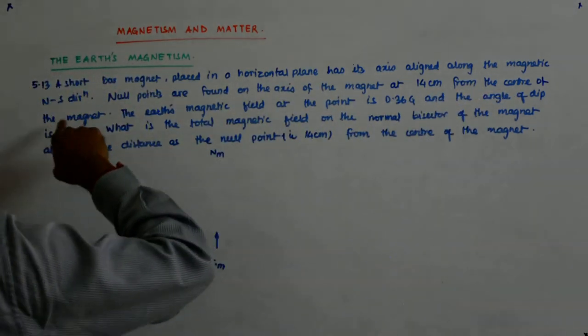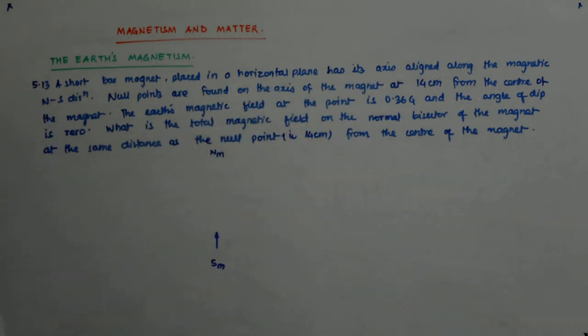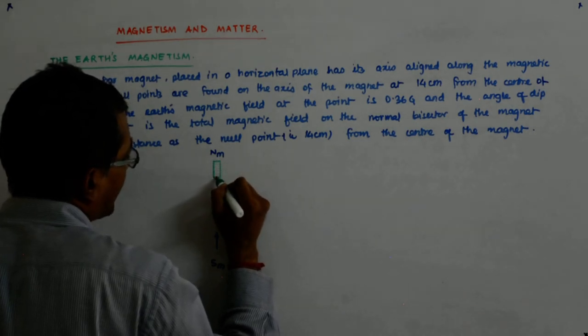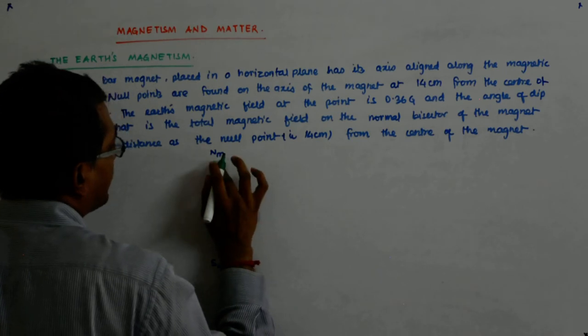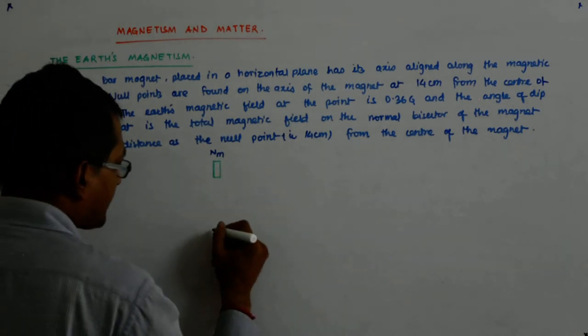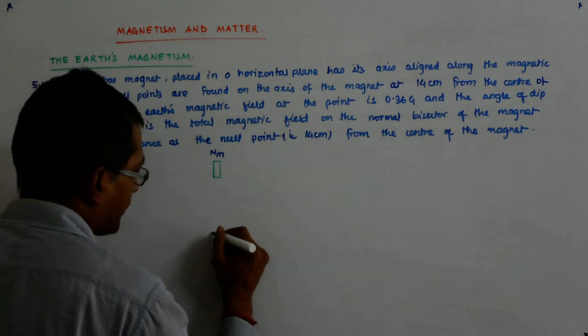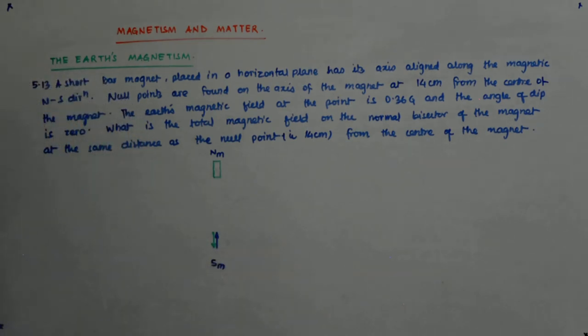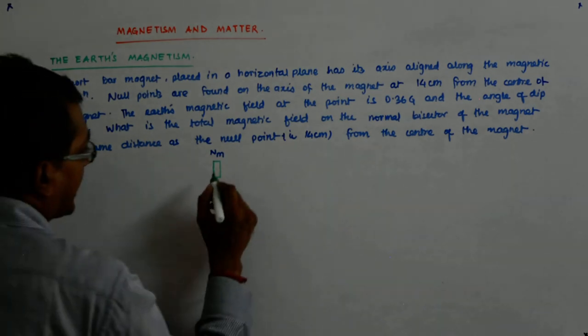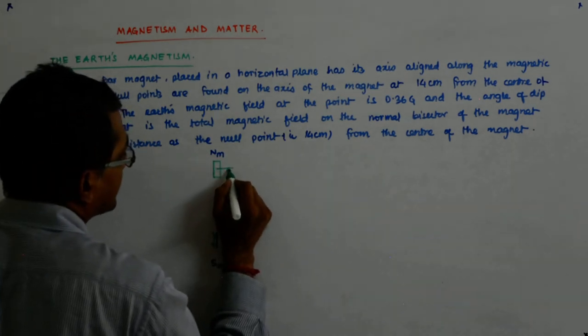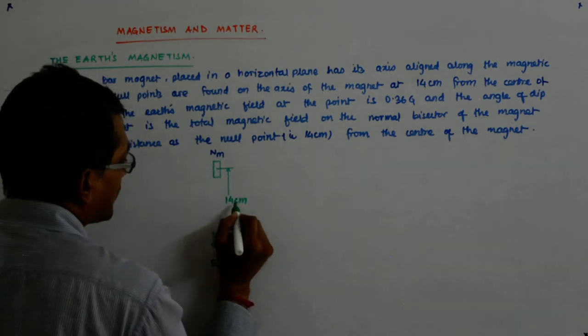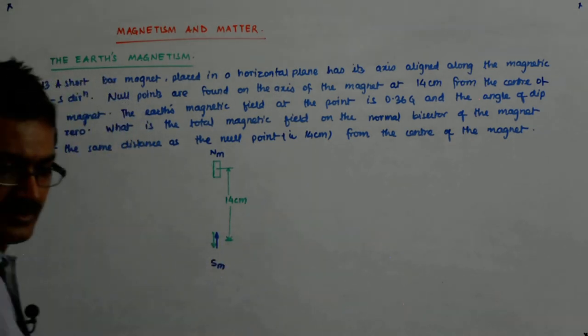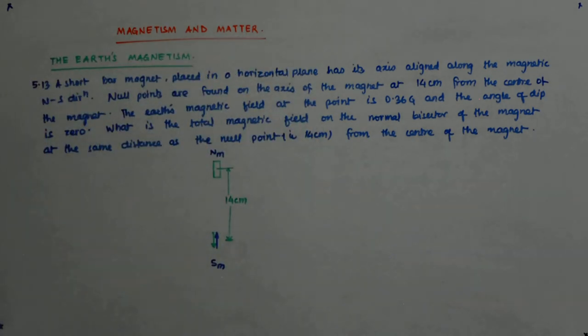Null points are found on the axis of the magnet at 14 centimeters from the magnet. Now suppose I have a magnet here and I am forming a null point. Then what happens? At this very point, the field due to the magnet should be like this. Is it not? Then only this becomes a null point.